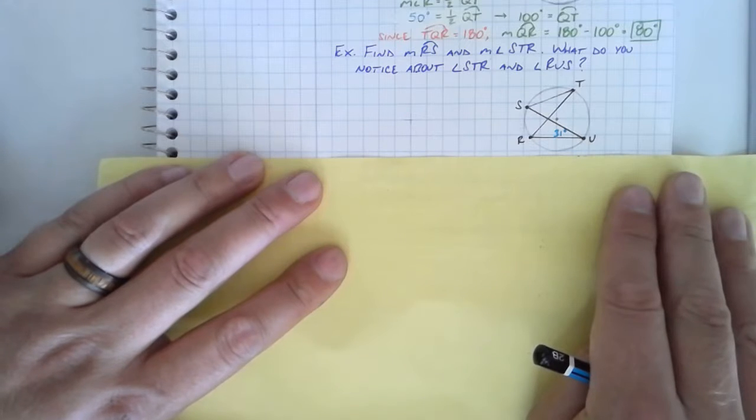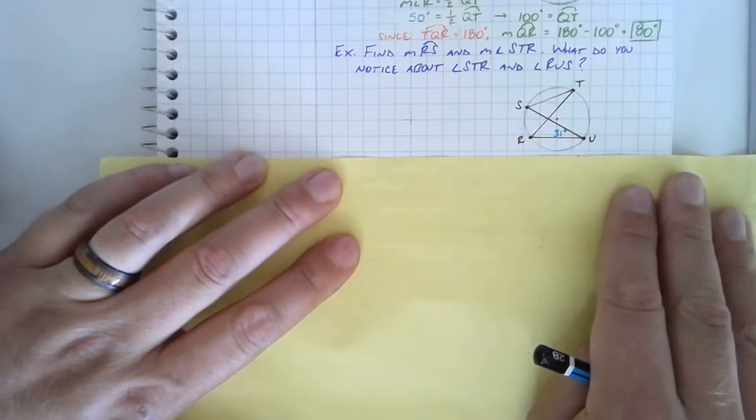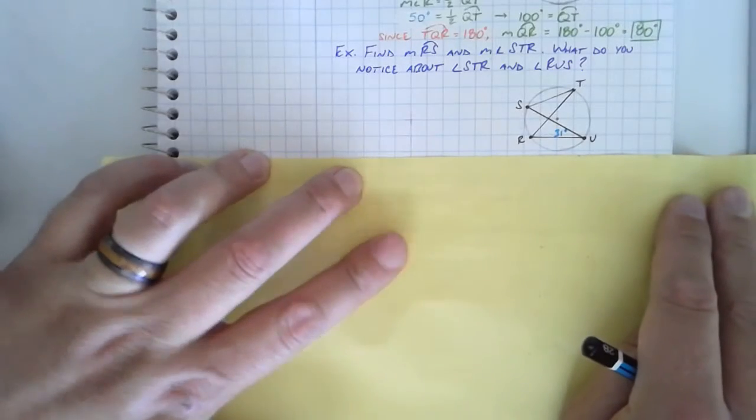Alright, so in this example, we're given the following diagram, a circle with what appears to be an hourglass or black widow type of shape in the inside of it.